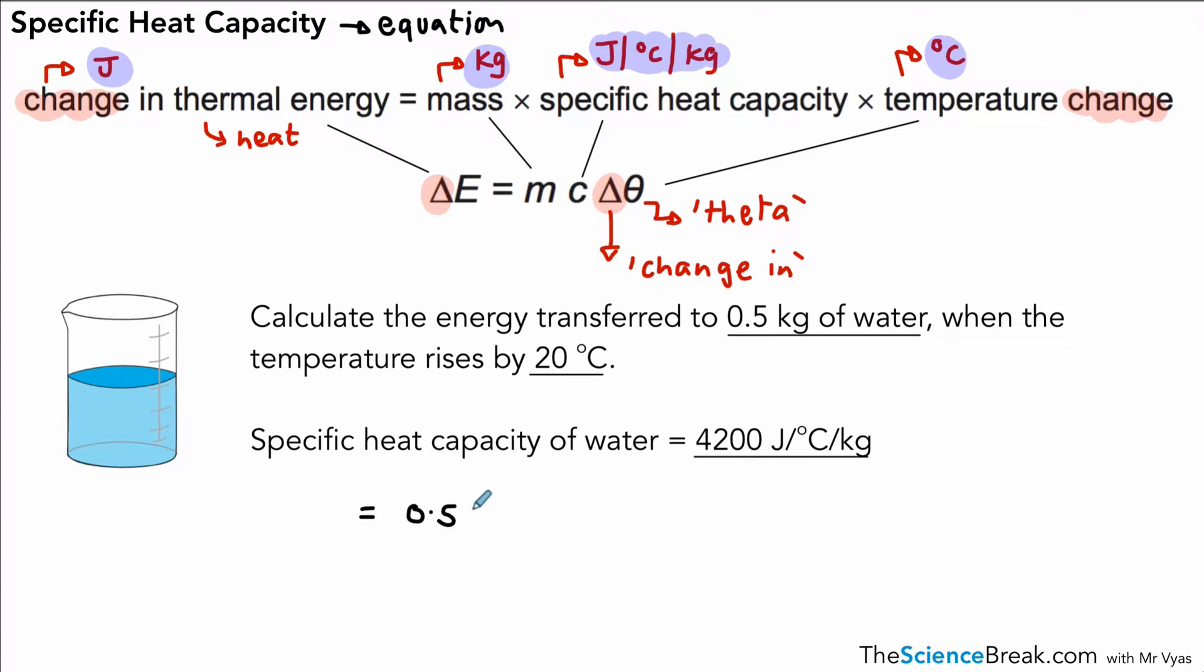You should not take a highlighter in, but you can certainly underline parts in questions. So it's a simple case of mass times specific heat capacity times temperature change. So that's 0.5 times 4200 times 20. And if we work that out, we get an answer of 42,000, and because we're working out the energy transfer, it's in joules. And that can be written also as 42 kilojoules—42,000 joules being 42 kilojoules.